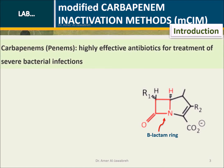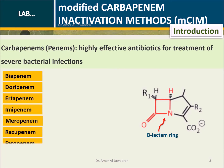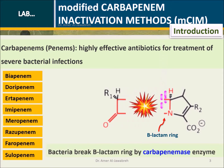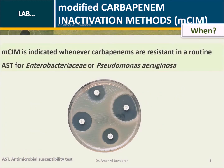Introduction: Carbapenems, or penems, are highly effective antibiotics for treatment of severe bacterial infections. Penems include Biapenem, Doripenem, Ertapenem, Imipenem, Meropenem, Razopenem, Faropenem, and Solopenem. Bacteria break the beta-lactam ring via the carbapenemase enzyme. The test is indicated whenever carbapenems are resistant in routine AST for Enterobacteriaceae or Pseudomonas aeruginosa.